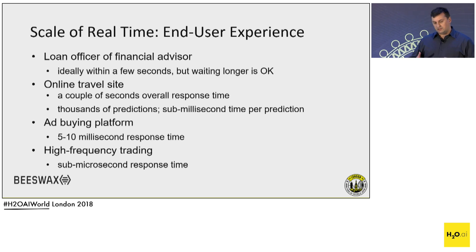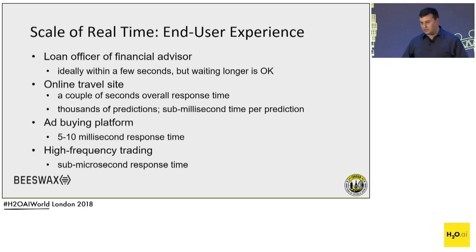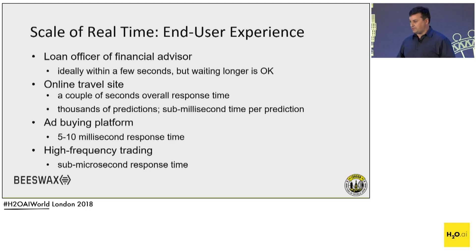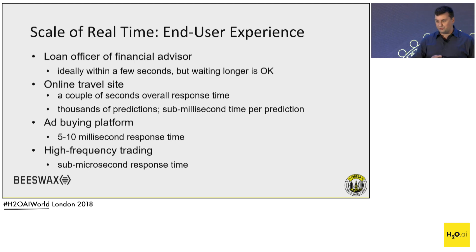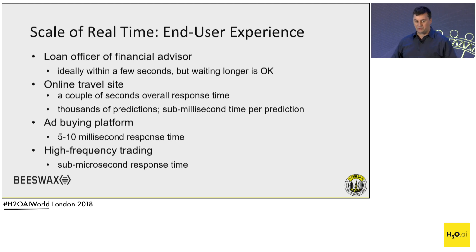The application defines the business requirements. For example, for a loan officer application that helps determine credit worthiness, it's okay to respond within a few seconds or even a little longer. For an online travel site, we need under a second overall response time, but the application also has to make multiple predictions — sometimes thousands per request if you need to evaluate thousands of hotels for one search.